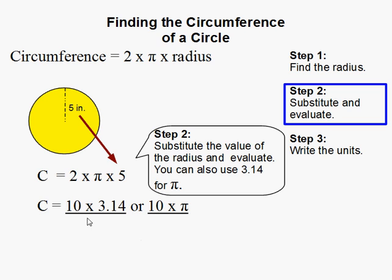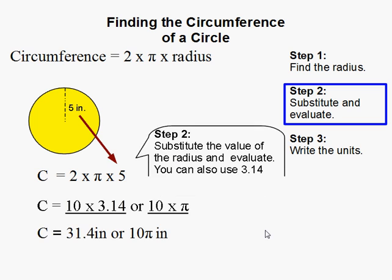Alright so I went ahead and did both. So 2 times 5 is 10. So I can do 10 times 3.14 or I can do 10 times pi.